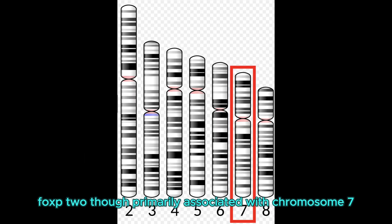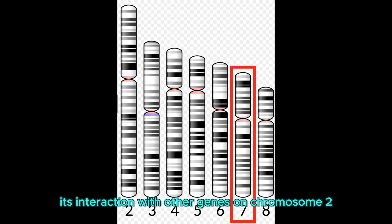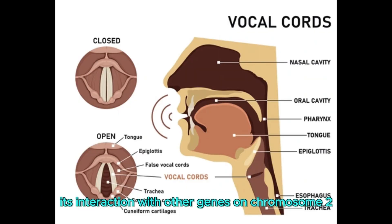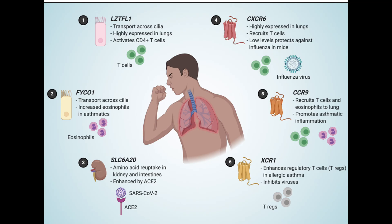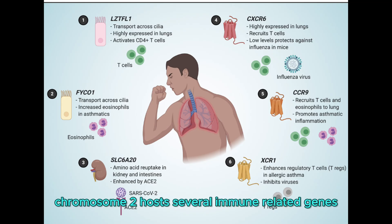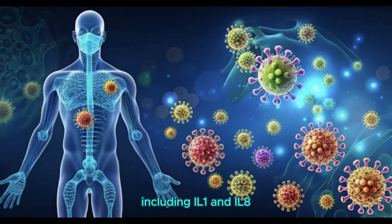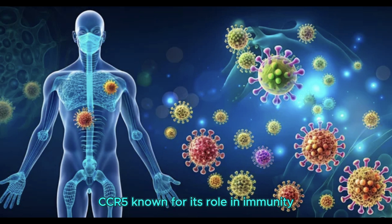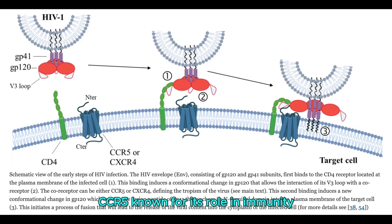FOXP2, though primarily associated with chromosome 7, its interaction with other genes on chromosome 2 contributes to language and speech abilities. Immune function: Chromosome 2 hosts several immune-related genes, including IL-1 and IL-8, genes involved in inflammatory responses, and CCR5, known for its role in immunity and as a co-receptor for HIV infection.